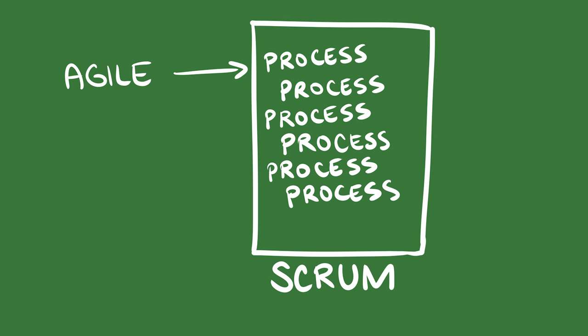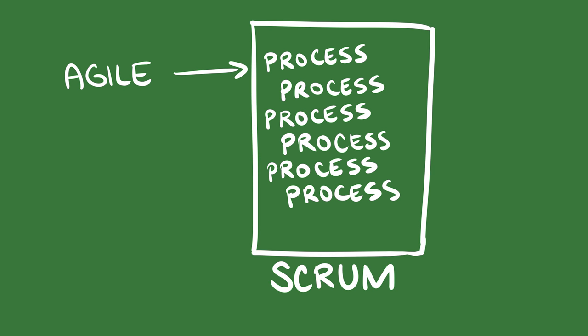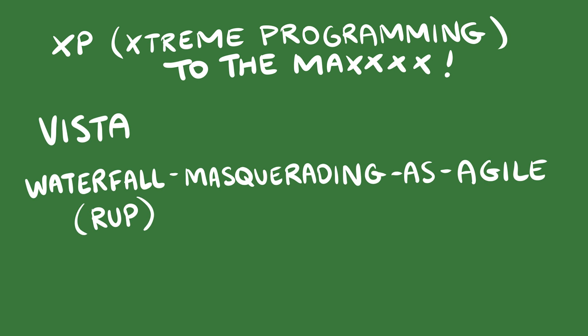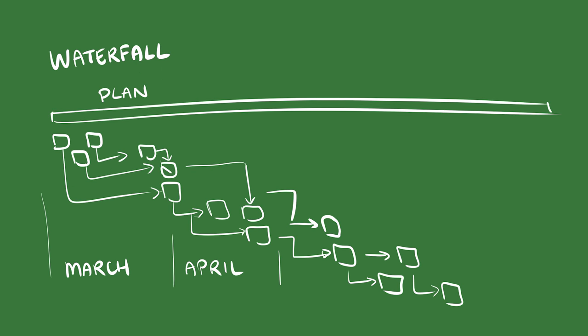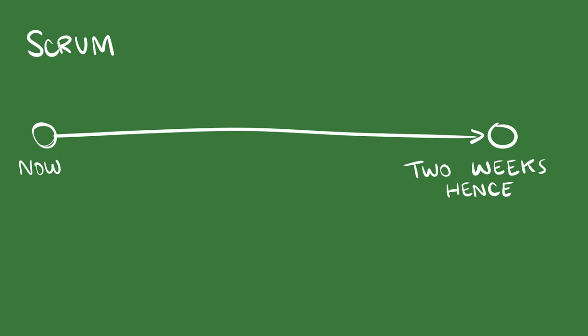That's where Scrum comes in. Agile is the interface and Scrum is the concrete implementation. Other less popular concrete implementations of Agile include XP, Vista, Waterfall masquerading as Agile, and Mario Kart. One of the key failings of Waterfall is that it tries to predict very far into the future, which is very inaccurate. Scrum focuses on trying to accurately predict about two weeks into the future. Scrum defines a single two-week iteration as a sprint, to further drive home the association between software development and very bad cell phone customer service.